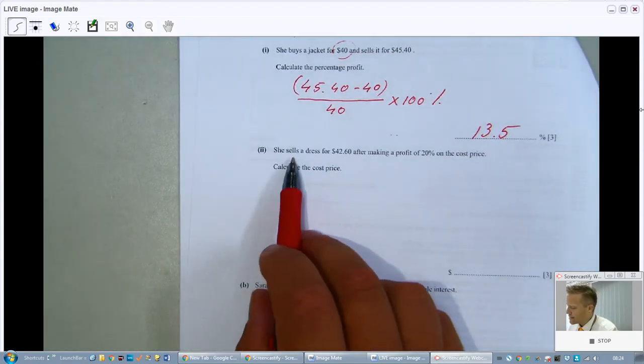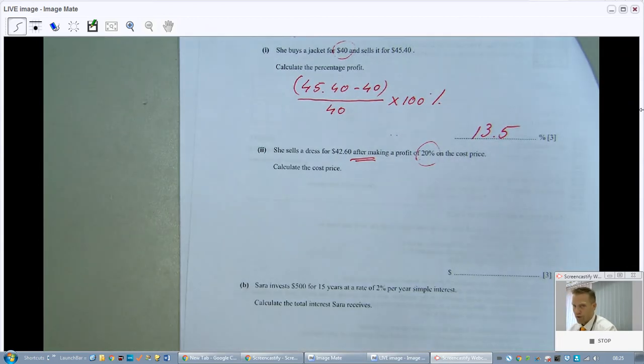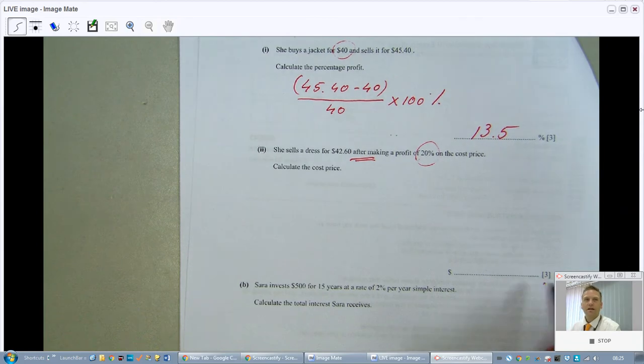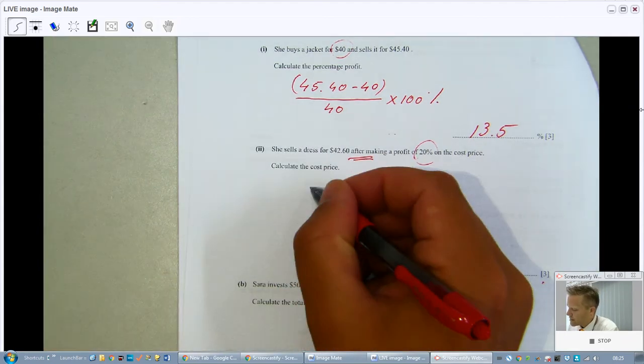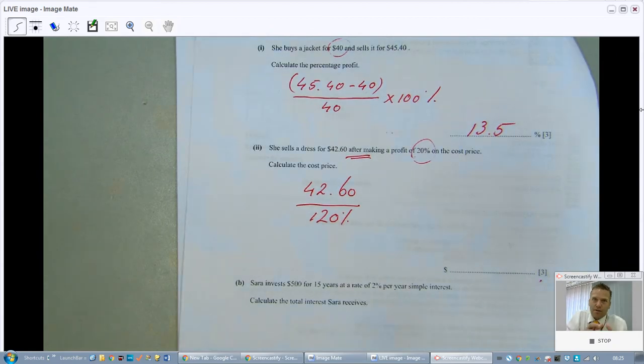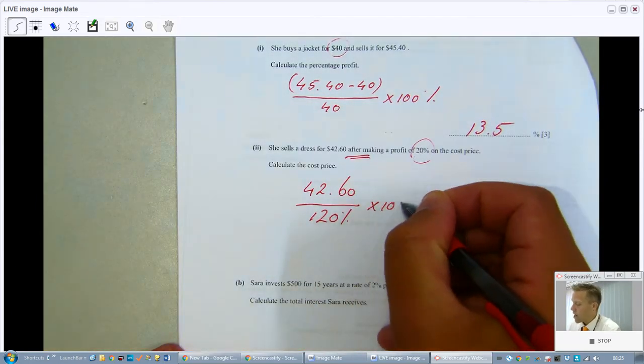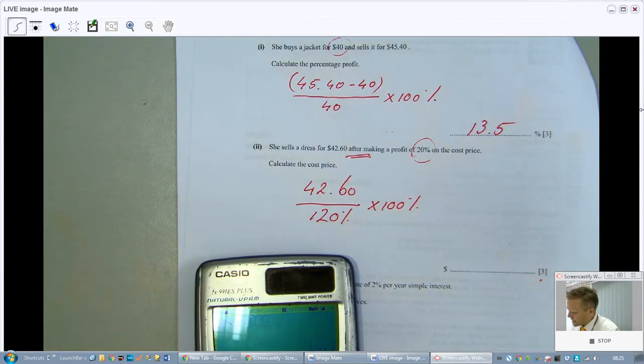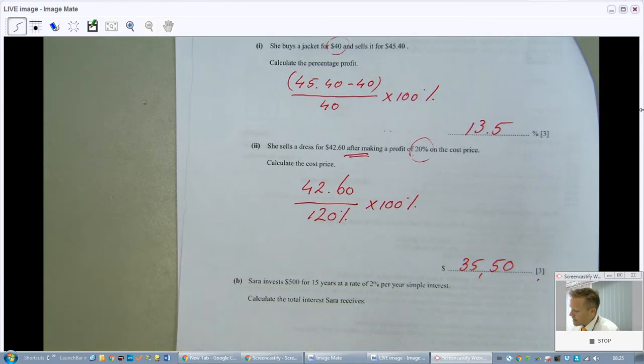Let's move on. She sells a dress for $42.60 after making a profit of 20% on the cost price. Calculate the cost price. This is reverse percentage. She gains a profit of 20%. So this price, $42.60, is 120% of the original price. The original price, 100% plus 20% profit. So, divide it by 120 to go to 1%, and then times it by 100% to find the cost price. And you're just telling yourself that cost price needs to be less than the $42.60. That is $35.50.